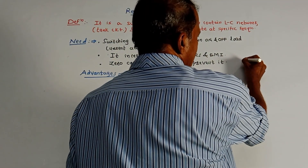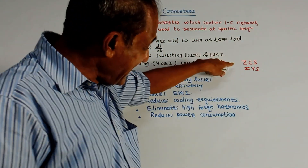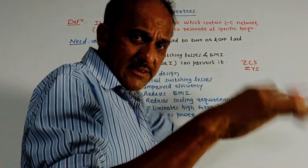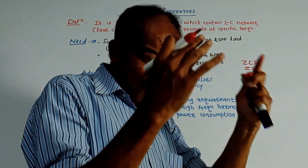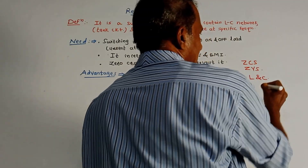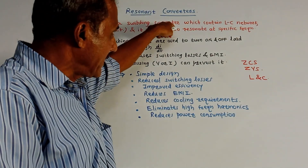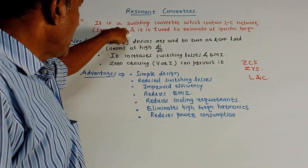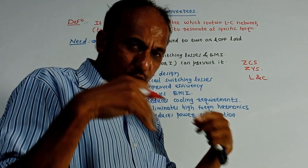We will be talking about two techniques: zero current switching (ZCS) and zero voltage switching (ZVS). As the name indicates, whenever current crosses the zero line or whenever voltage crosses the zero line, then switching action takes place. This is the basic concept of resonant converters. The circuit operates on the principle of resonance, using an inductor and capacitor — called a tank circuit or resonant circuit. A resonant converter is a switching converter which contains an LC network, tuned to resonate at a specific frequency.